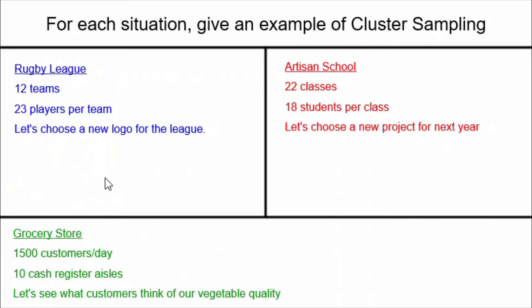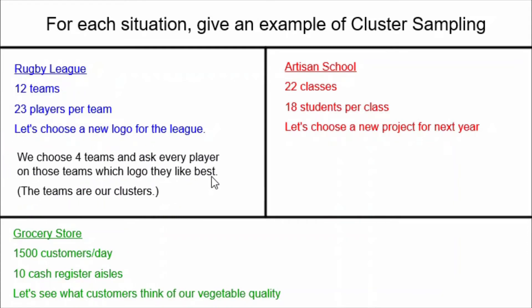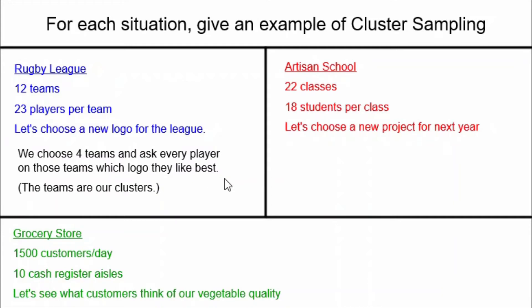So for our rugby league, how would we do cluster sampling? There are 12 teams, each team has 23 players, and the survey is about choosing a new logo for the league. What we do with cluster sampling is — let's say we choose four of the teams and ask every player on those teams which logo they like best. That way the teams are our clusters. Here we have an example of cluster sampling applied to the situation.